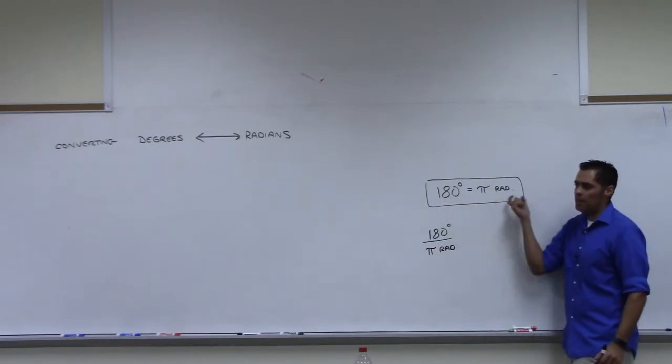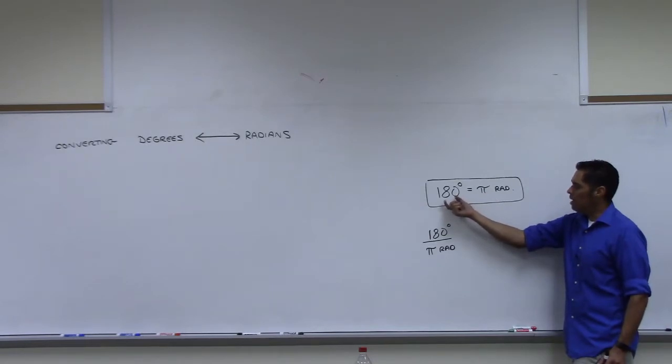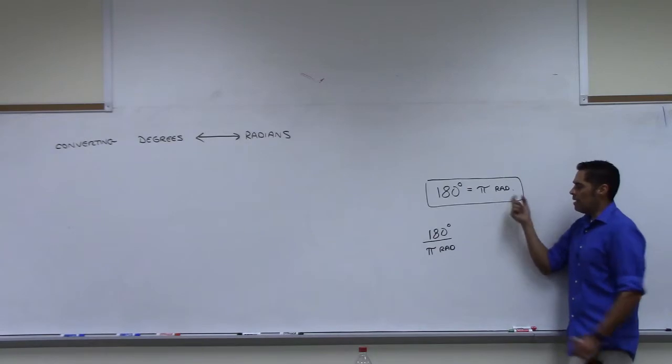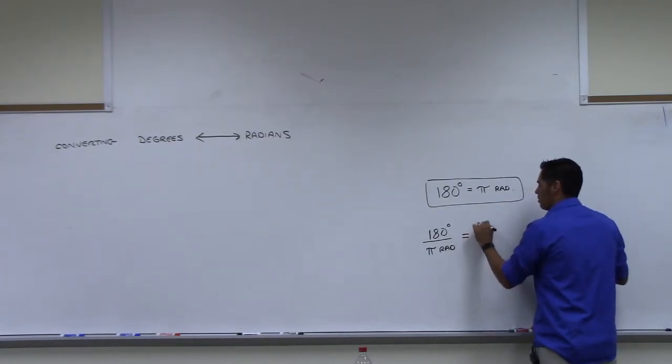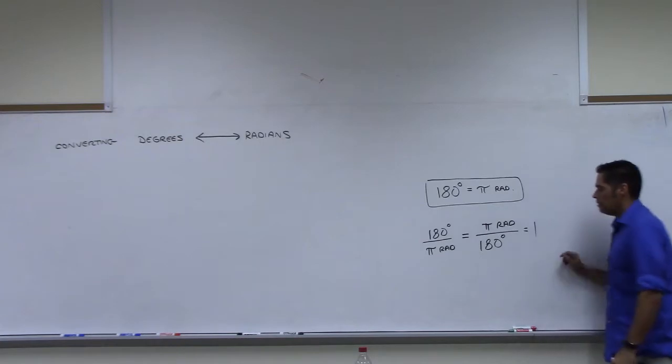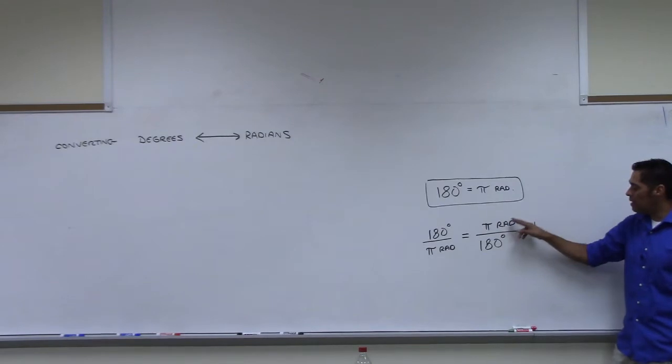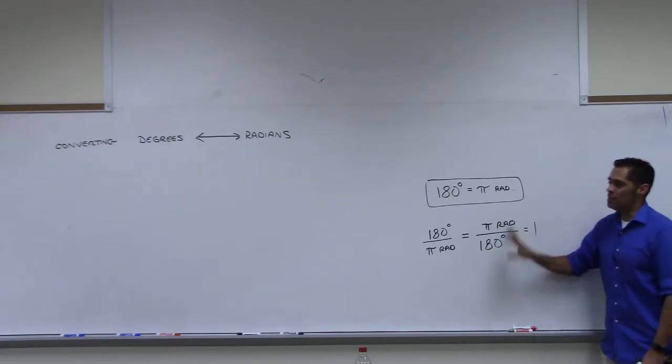But what if I divide 180 on both sides? I get 1 on this side, and on this side pi radians over 180. So that's equal to 1 though. So I could say that they're equal to each other if they're both equal to 1. So 180 degrees divided by pi radians is the same as pi radians divided by 180 degrees, but that's the same as 1. Do you all follow me? I'm going to use this now.